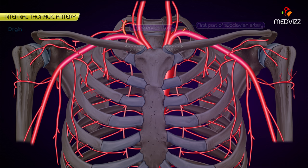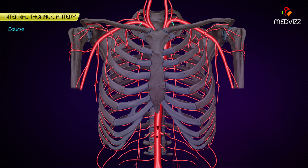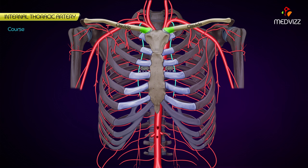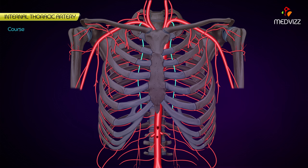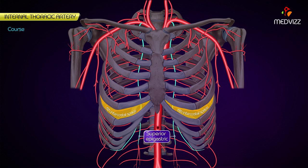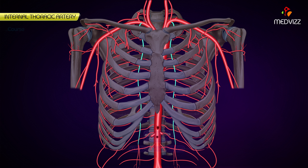The internal thoracic artery descends posterior to the medial end of the clavicle and upper six costal cartilages, around one centimeter away from the lateral margin of the sternum. It ends in the sixth intercostal space by dividing into the superior epigastric and musculophrenic arteries.